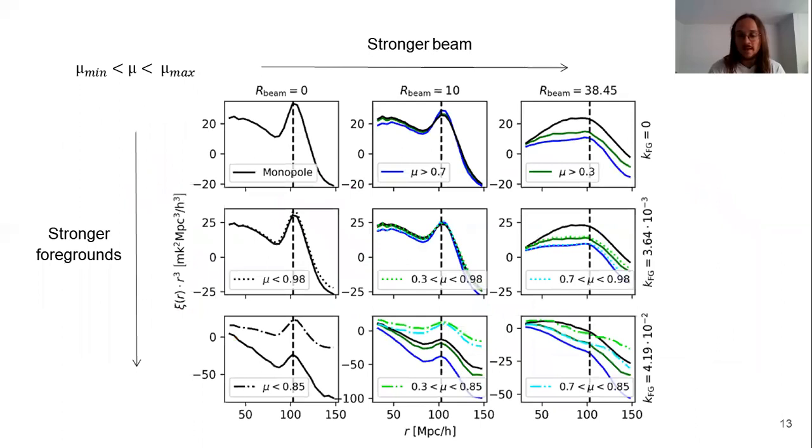Finally, we consider a lower plus upper cut in mu when we consider both effects together. We are interested here in the plots on the corner below, especially in which we can see the combined effects. Black lines represent that we have not applied no cut at all, green lines we have applied a mild cut, and blue lines a stronger one.